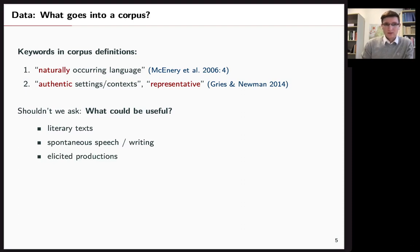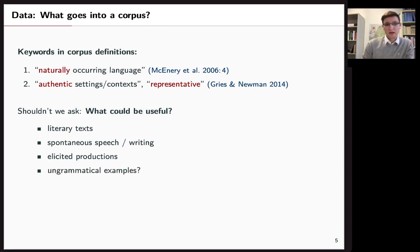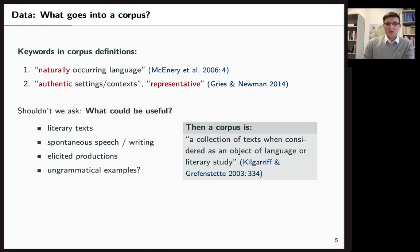But what about elicited productions? Those would not count as naturally occurring language in most cases. But I would argue that they should be included in the corpus because they are really useful resources. You just have to make sure that you can separate those. Also ungrammatical examples. I haven't really seen many corpora that use ungrammatical examples as well. You collected so much data with ungrammatical examples and they are really useful. Why not make them accessible to other people by including it in your corpus set.